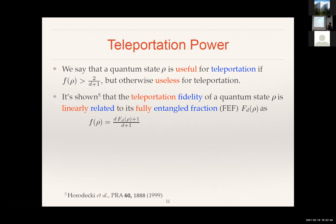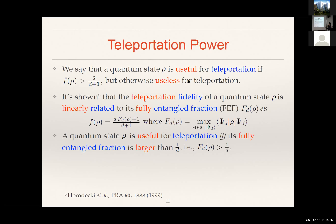A priori, it might seem like a difficult thing to do — if I just give you this density matrix, you need to compute this integral. But it turns out that in 1999, the Horodeckis showed that this quantity is linearly related to another quantity called the fully entangled fraction, which is a lot easier to compute. It's basically just the expectation value of the density matrix with respect to maximally entangled two-qubit states. You optimize over the local choice of basis for all possible maximally entangled states, and the one that gives the largest number is the fully entangled fraction. This quantity tells you how good the state is in the task of teleportation, and it is useful whenever this inequality holds.